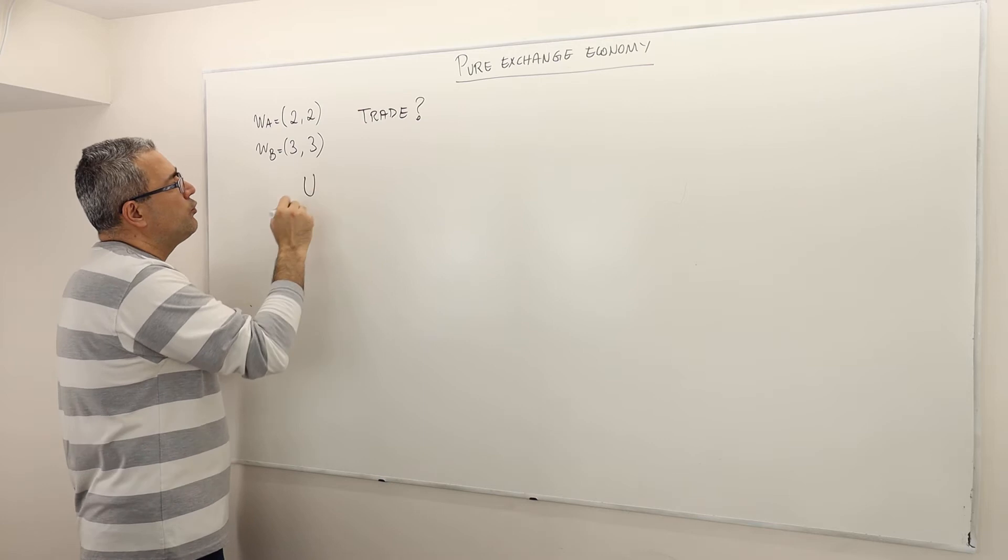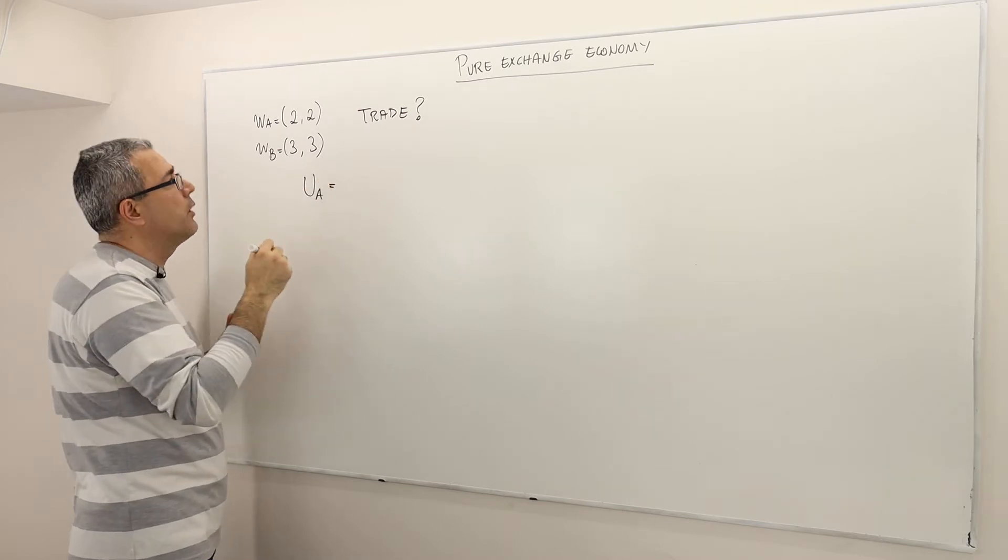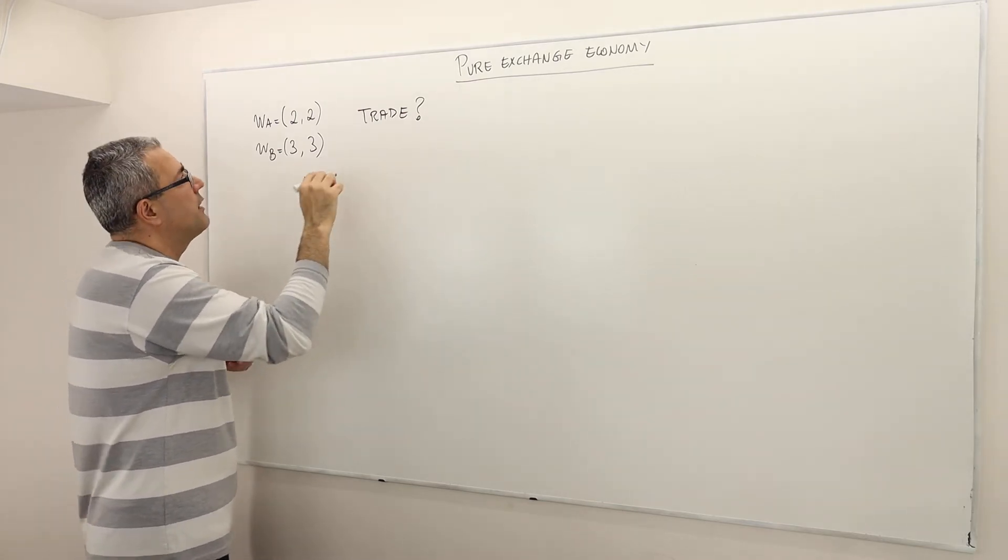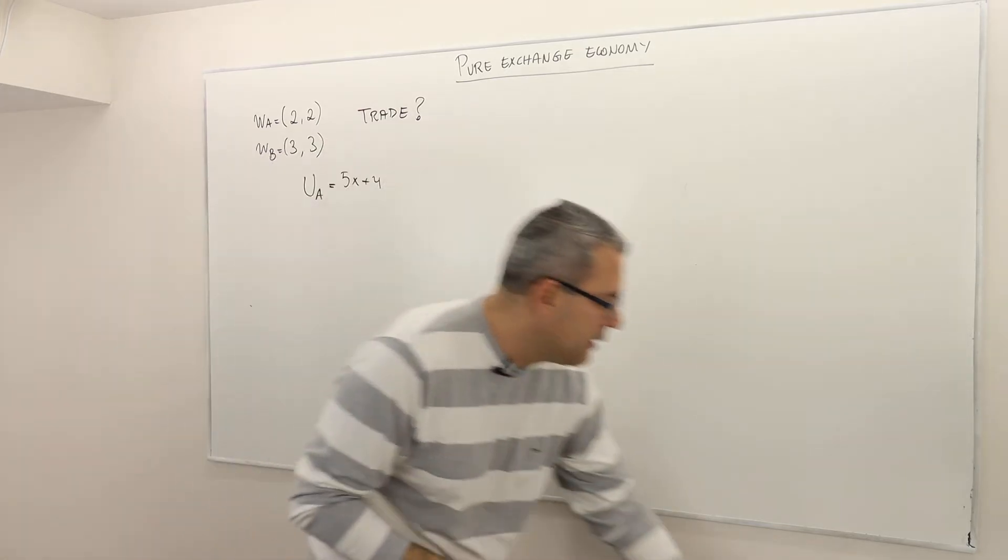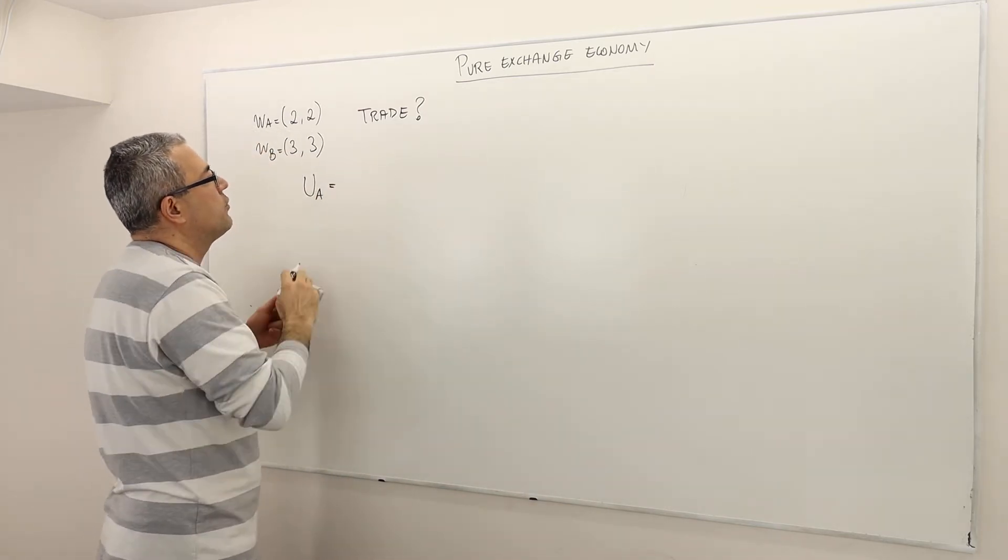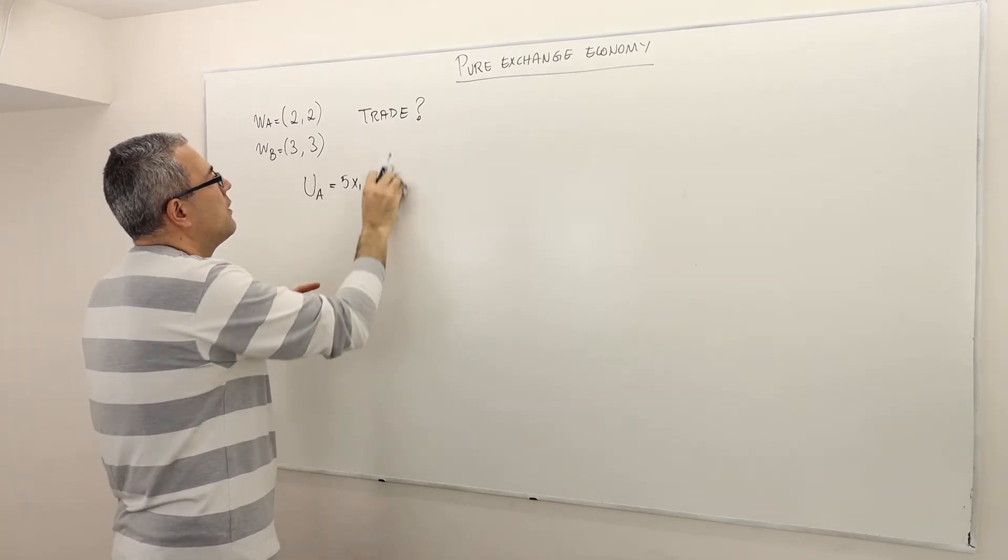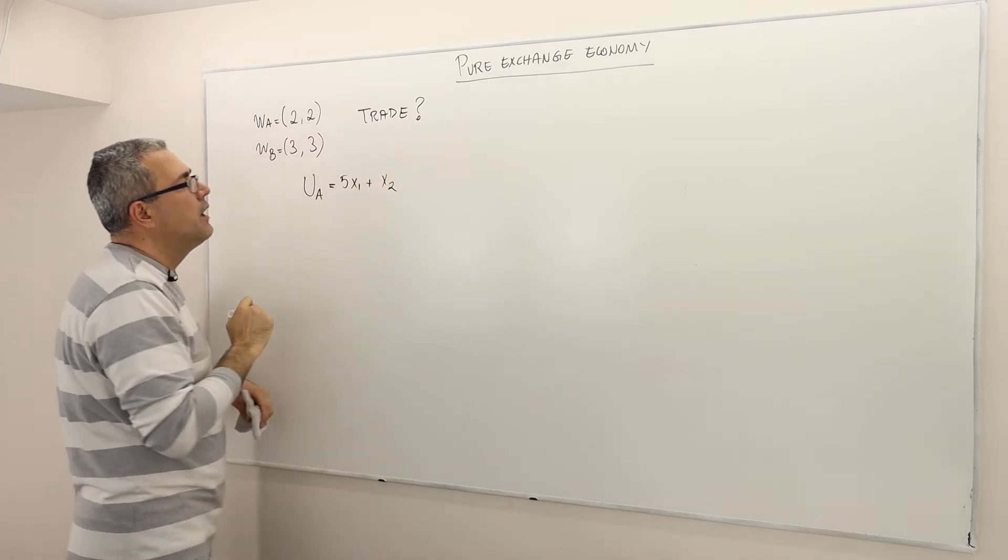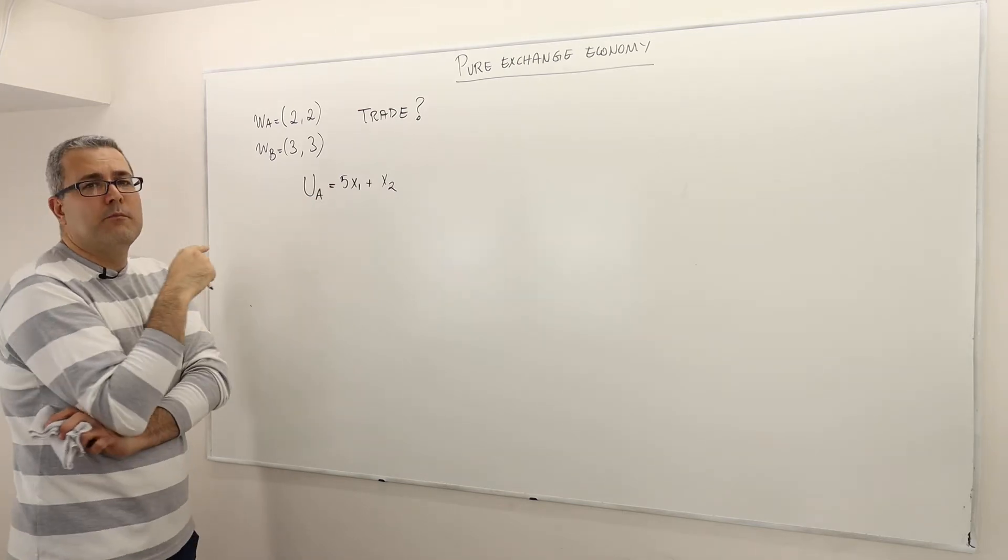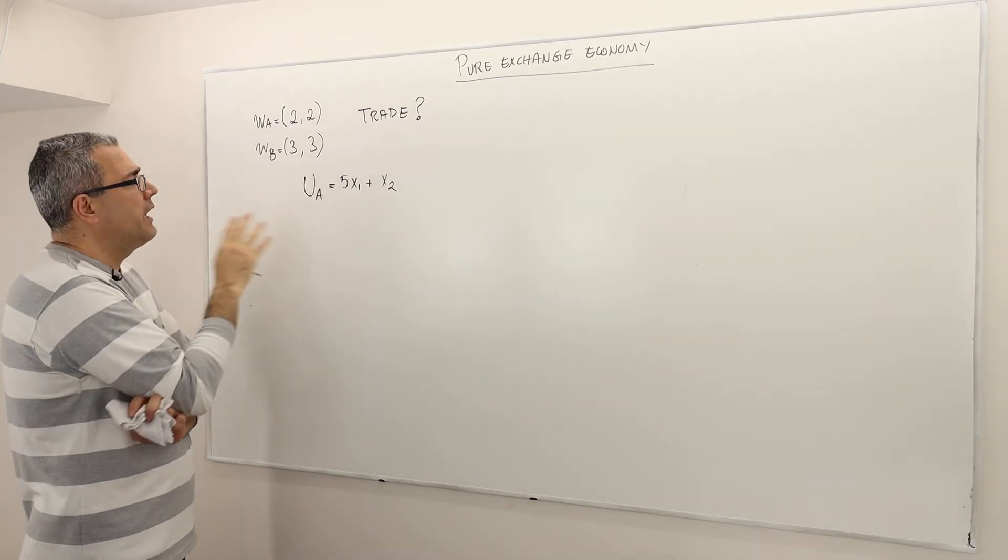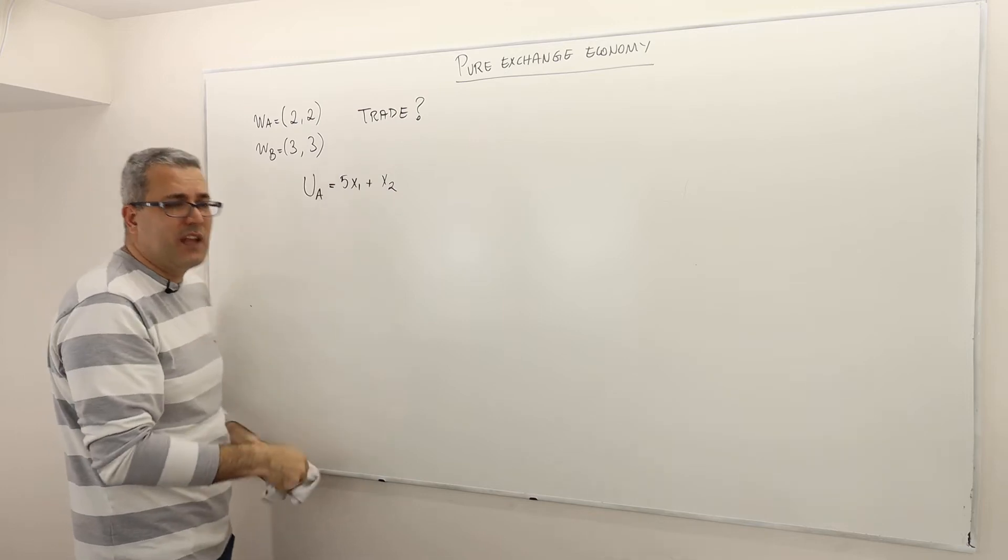For example, assume that agent A's preferences are represented by this utility function: 5x1 plus x2. And what does that mean? That means agent one values good one much more than good two. So for him, good one is very valuable because we multiply the utility by 5, but good two is not that valuable.